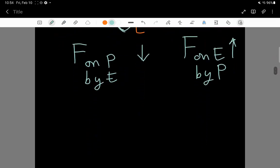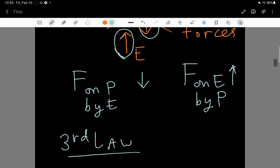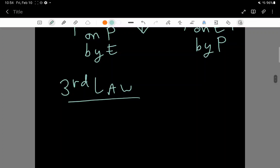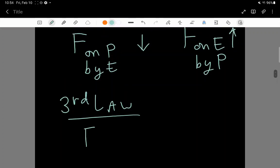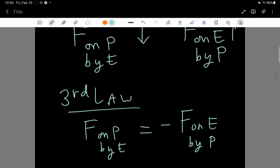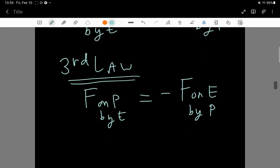Newton's third law is very simple to state for this particular example. Newton's third law says that the force on the person by the earth is only ever equal to the opposite of the force on the earth by the person. This is just what the third law says.